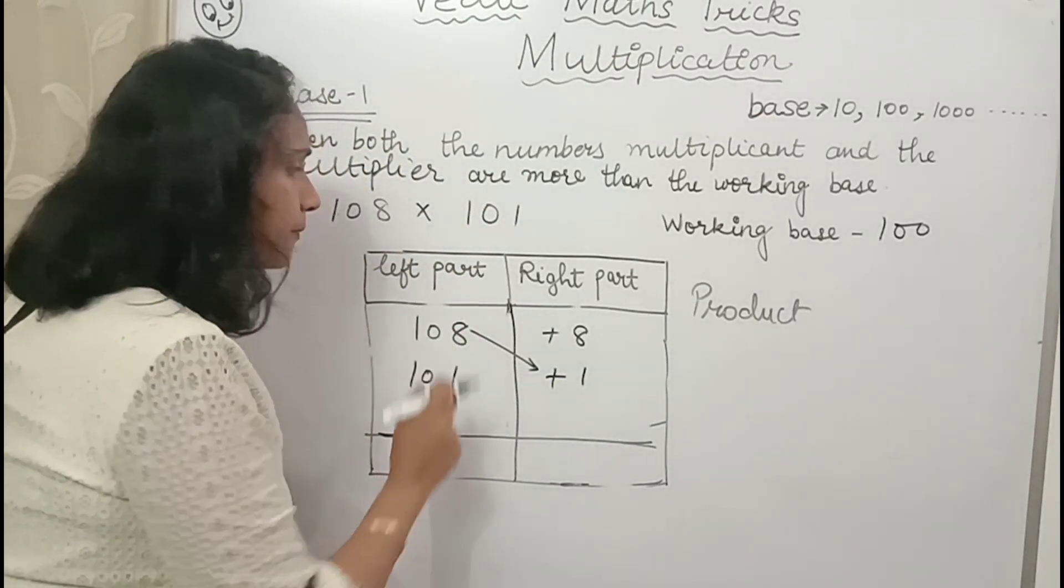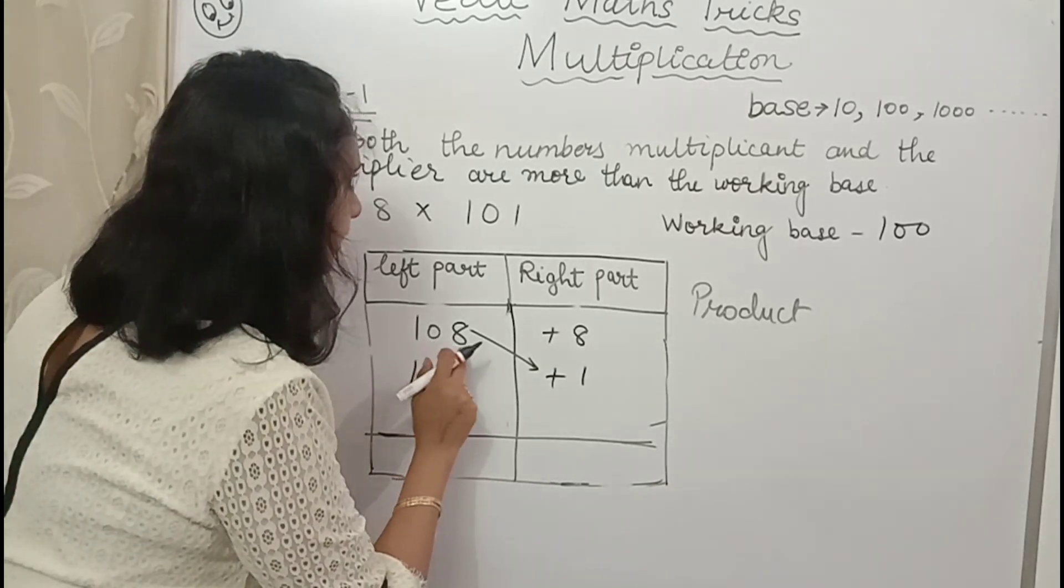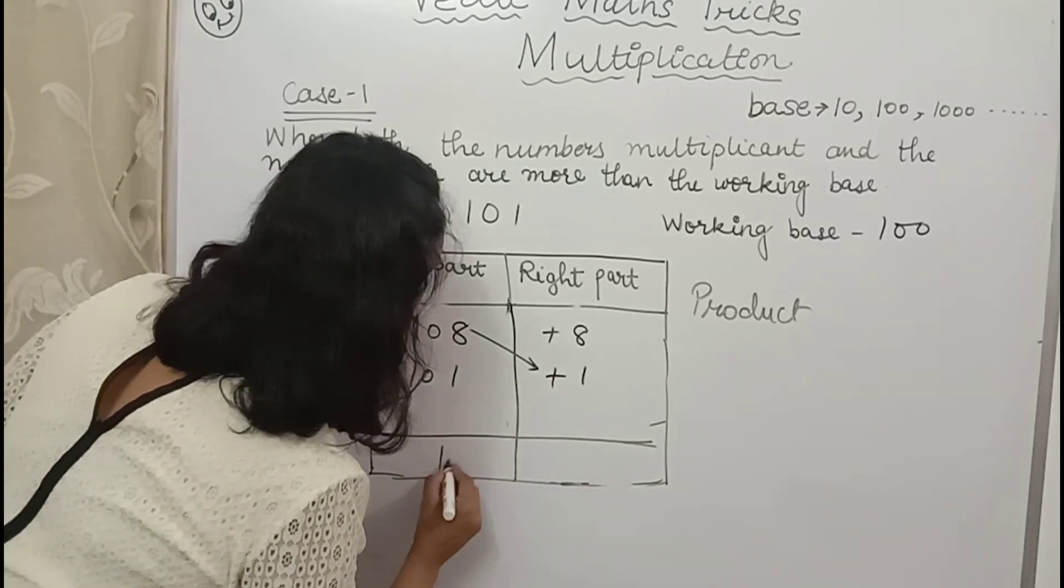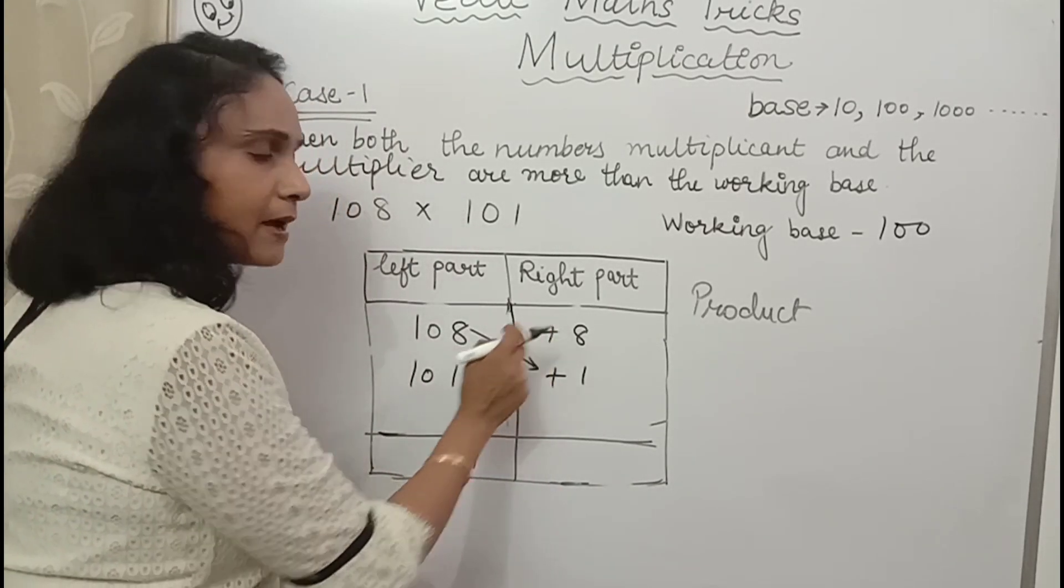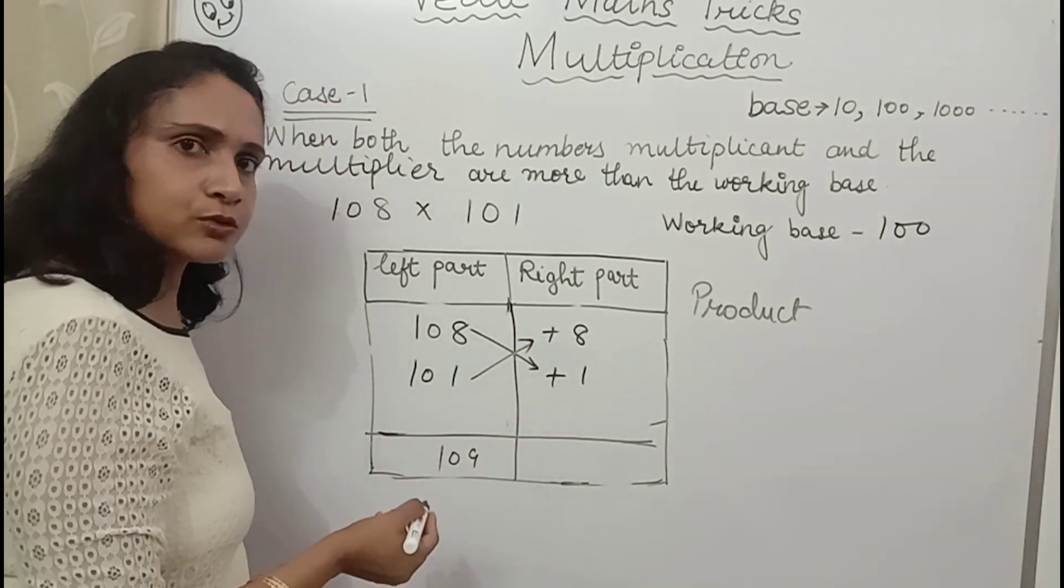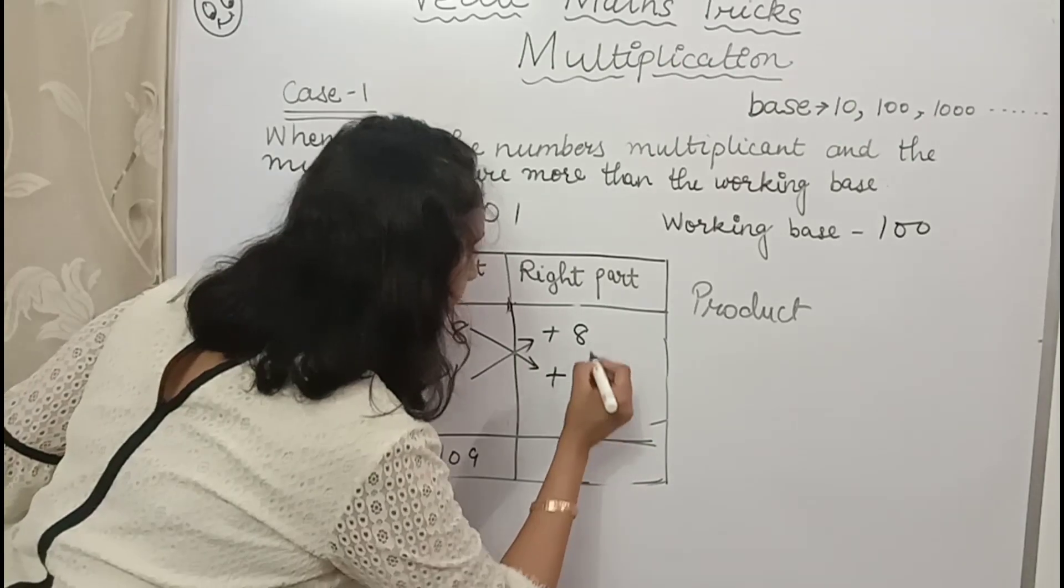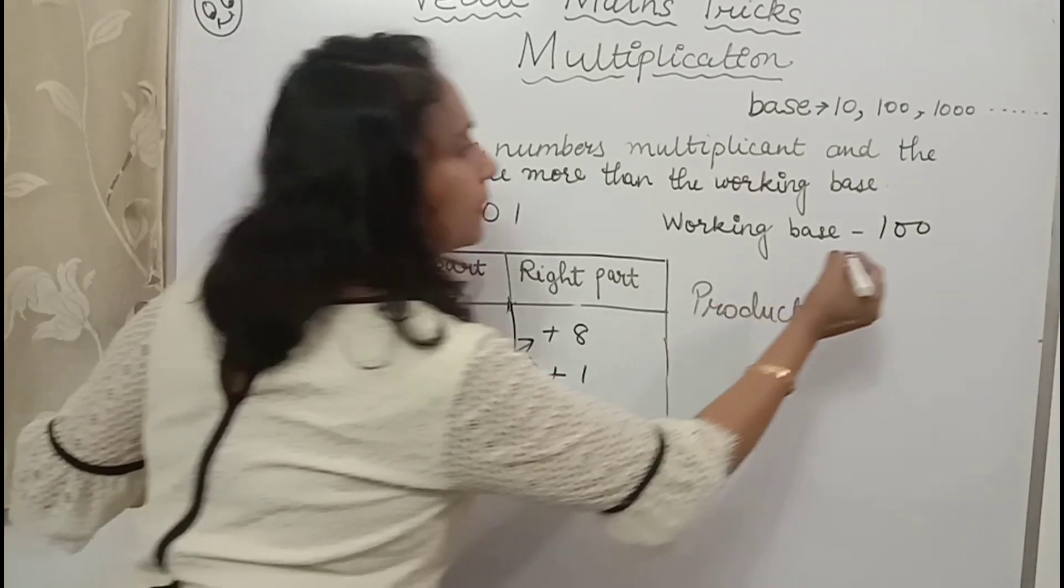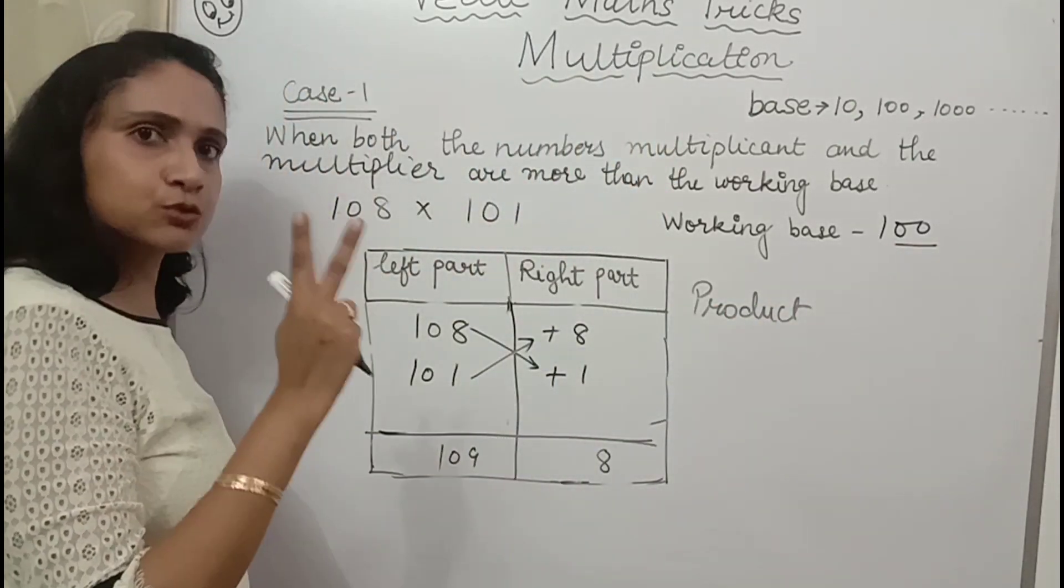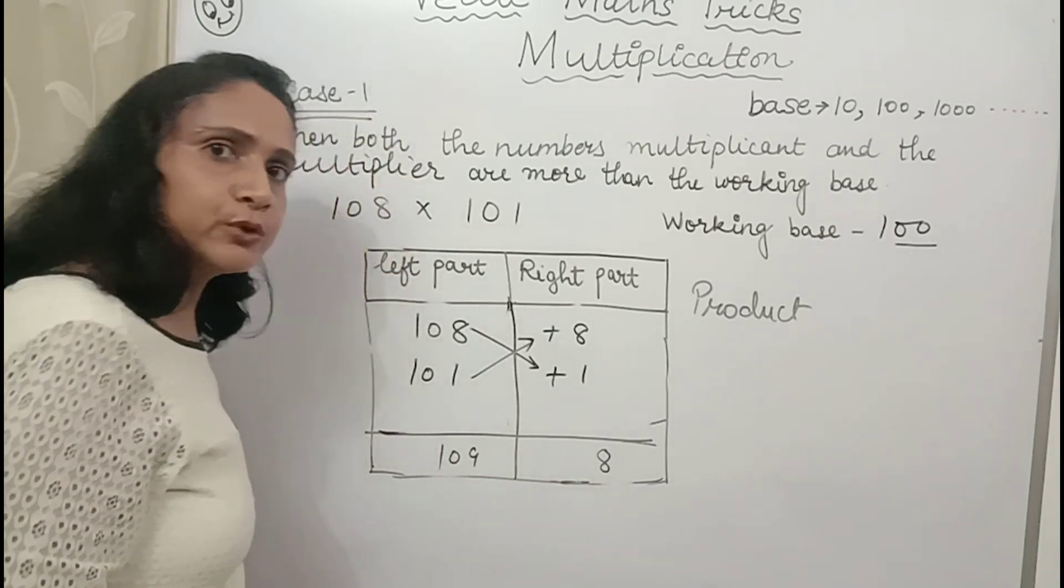Now I will evaluate my left part. 108 plus 1. That is 109. Similar manner, the same answer you will get by other cross also. Then right part, you will multiply your surplus. 8 ones are 8. Now how many zeros are there in working base? 2 zeros. So here I should have 2 digits.